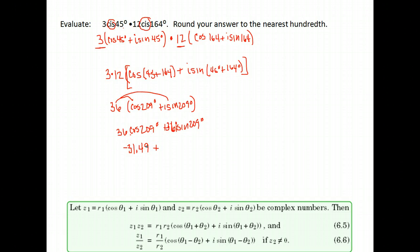Plus, then we have 36 times the sine of 209, which is negative 17.45. And don't forget your i that was with the sine. We have negative 31.49 minus 17.45 i. That would be our answer rounded to the nearest hundredth.